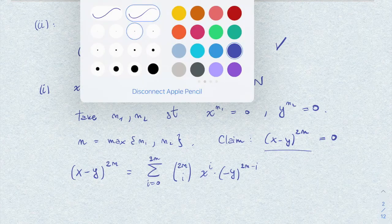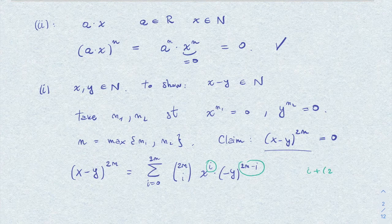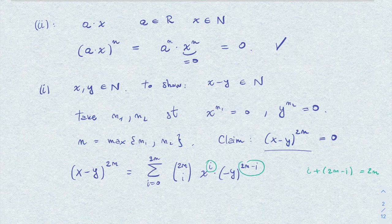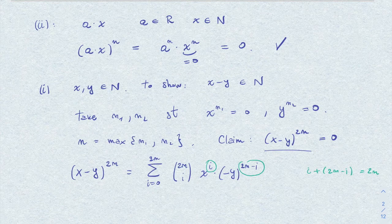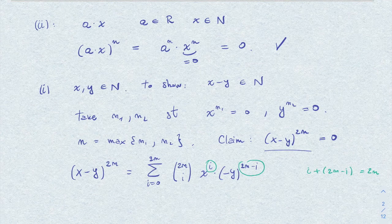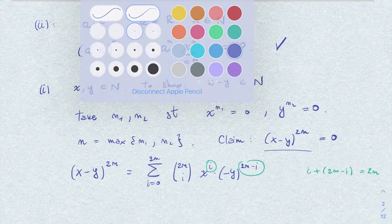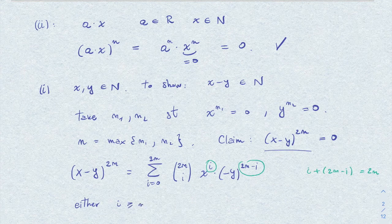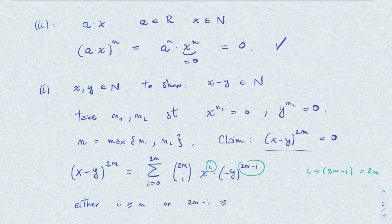The two exponents sum to 2n, so this means that if i is small, then 2n minus i will be at least n. Vice versa, when 2n minus i is small because i is big, then i will be at least n. So either i is at least n or 2n minus i is at least n.